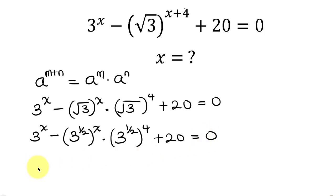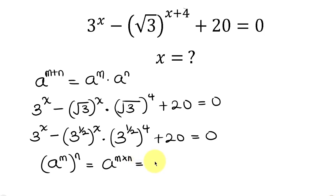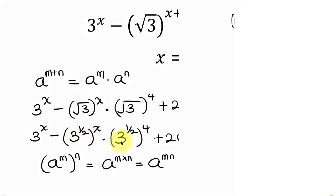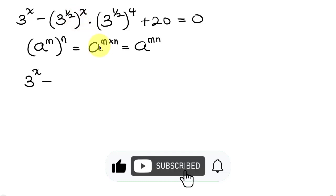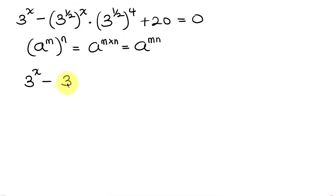Our next step will be to apply the law of indices that says when I have a to the m, and this is raised to the n, this is equal to a to the m times n — the powers multiply. So applying this here: we have 3 to the x minus 3 to the one-half times x, which is x over 2, times 3 to the one-half times 4.